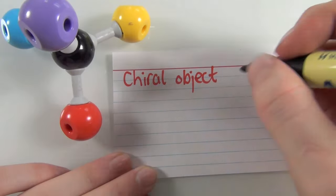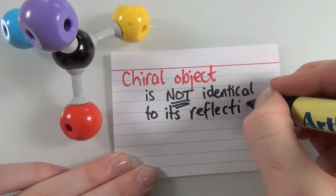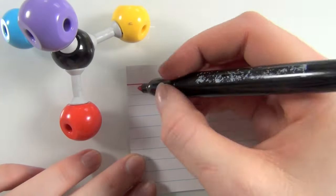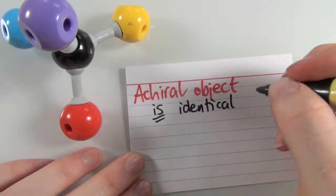So to sum up, a chiral object is not identical to its reflection. And an achiral object is identical to its reflection.